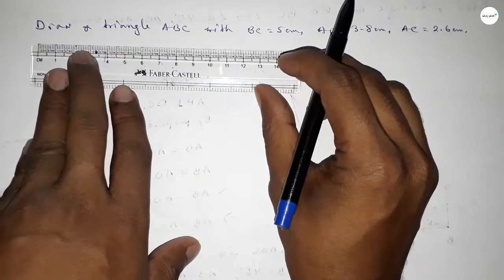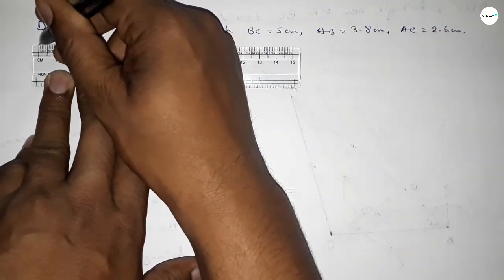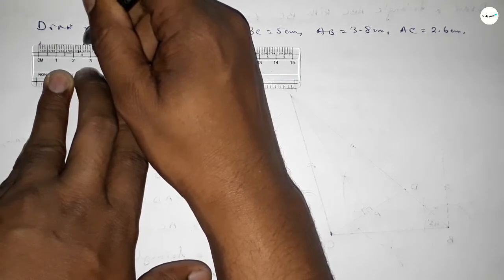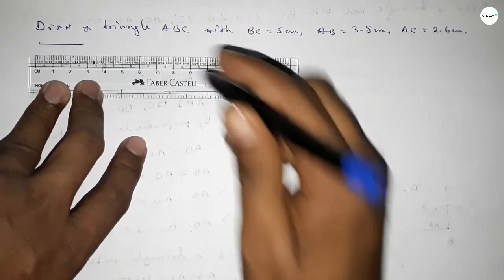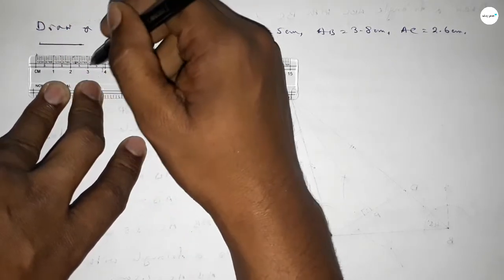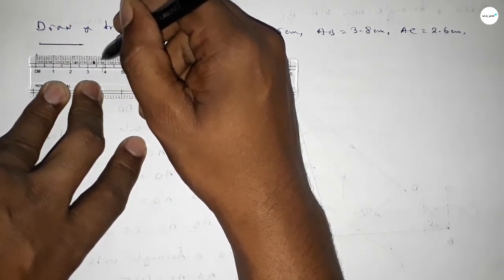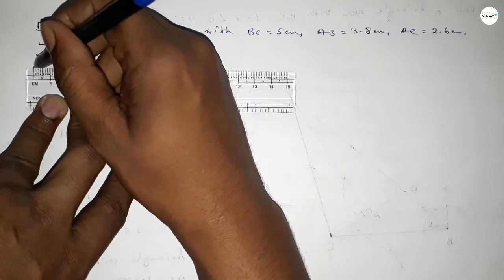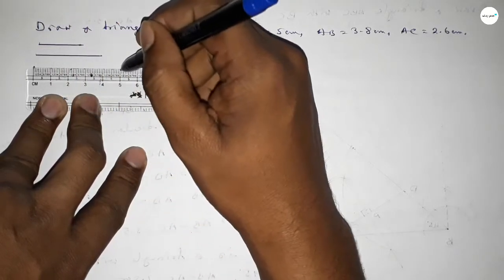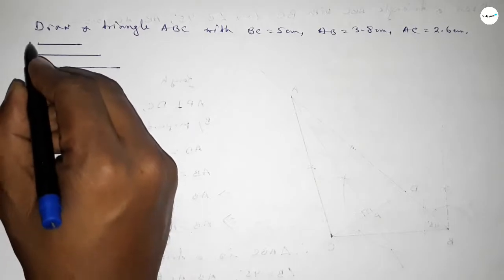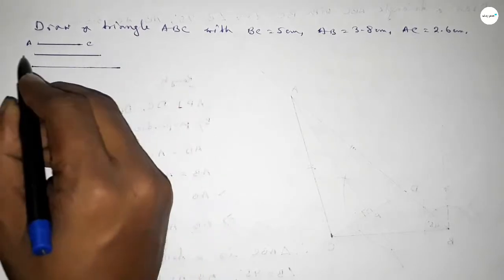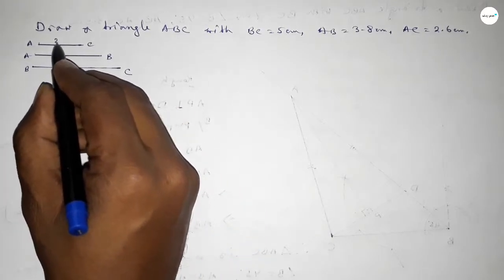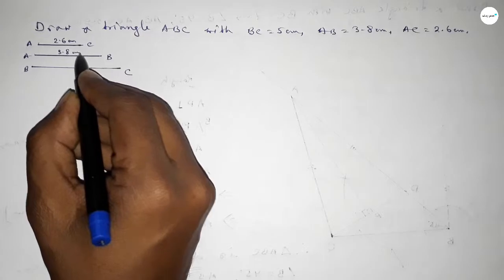First of all, we have to draw here a line of length 2.6 centimeter — so this is 2.6 centimeter. Next, drawing here a line of length 3.8 centimeter — so this is 3.8 centimeter. And last, drawing here a line of length 5 centimeter — so this is 5 centimeter. This one is the AC line, this one AB, and this one BC.